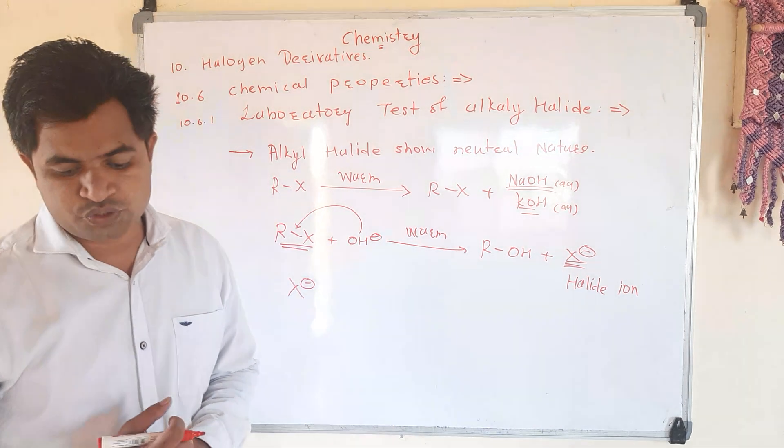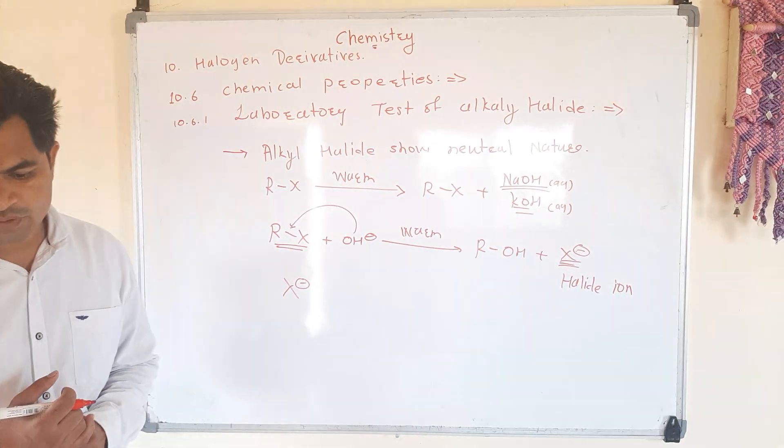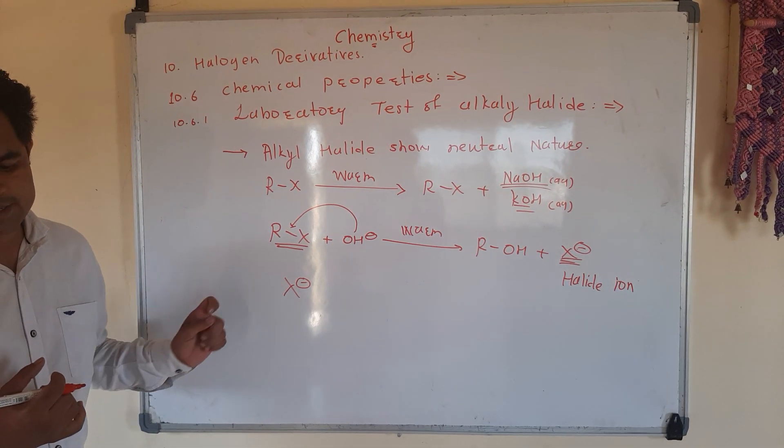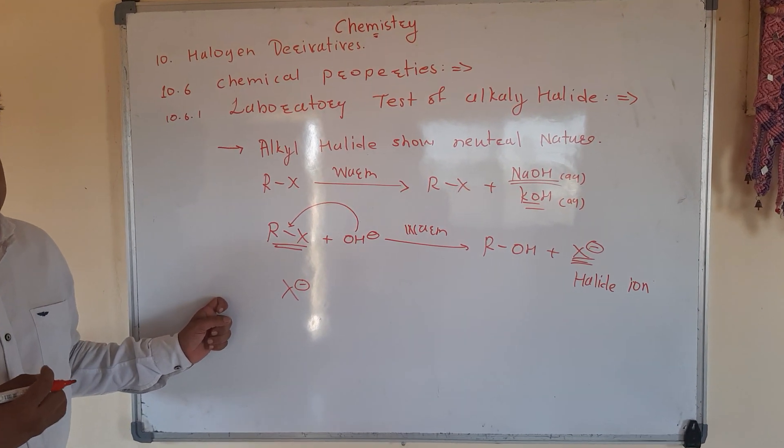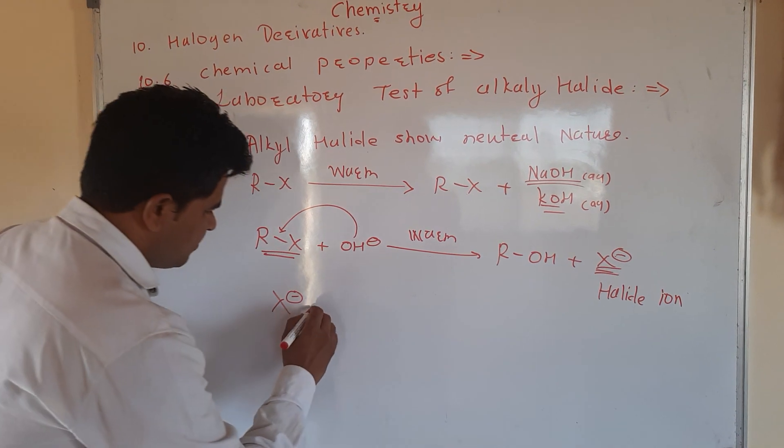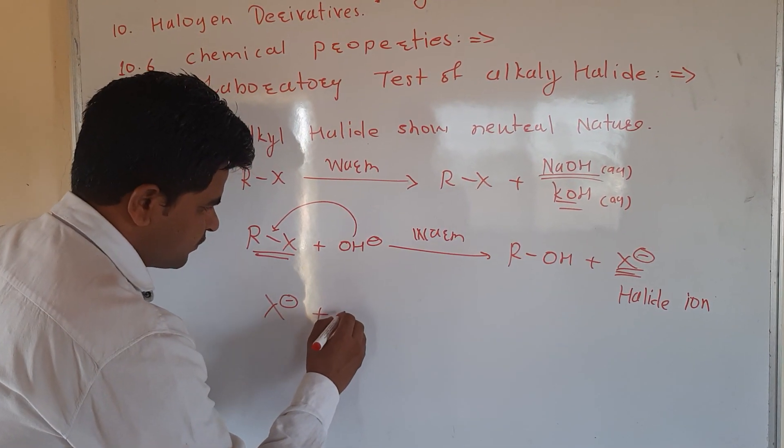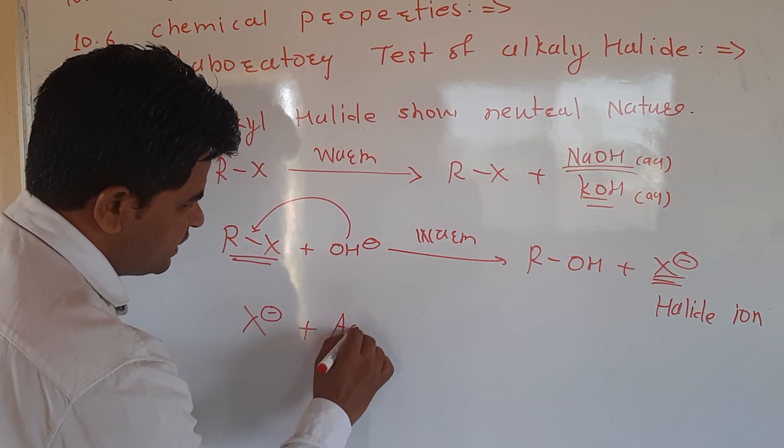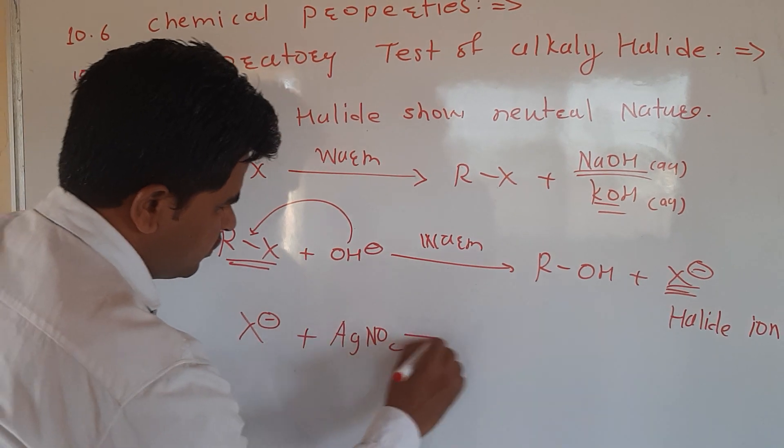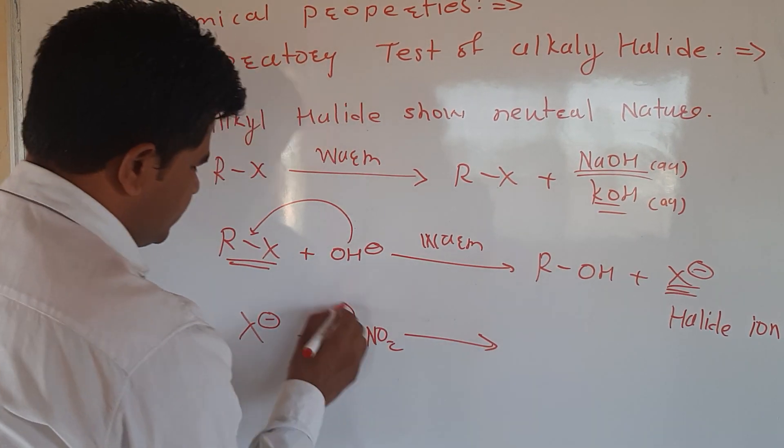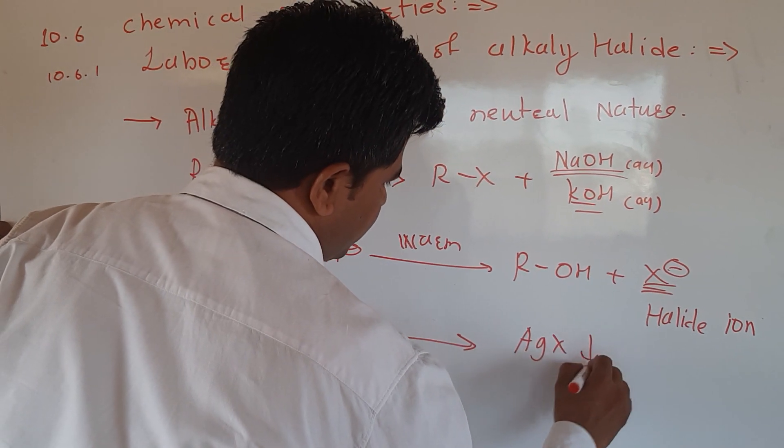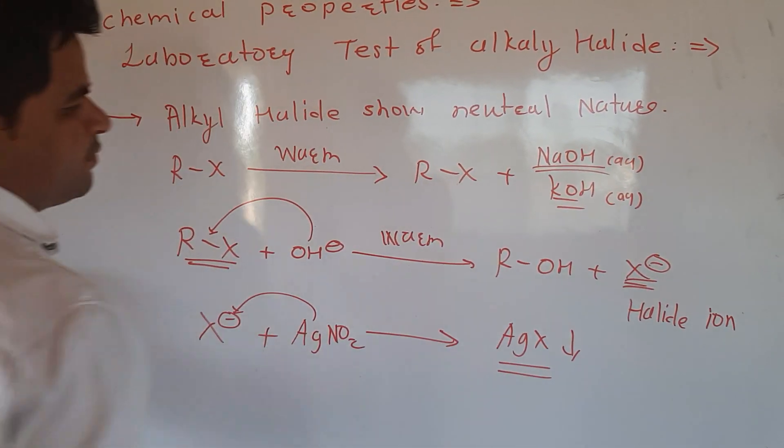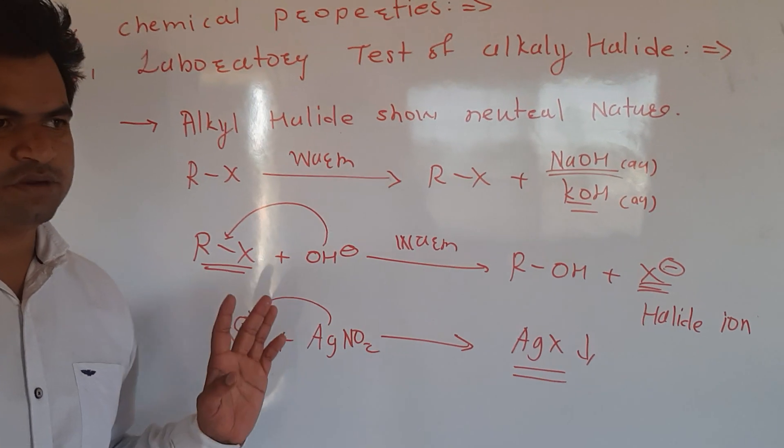This is HNO3, dilute nitric acid. This is silver nitrate, acidified. Suppose we have taken silver nitrate. That time this silver will combine with halide. Silver halide will form. And it gives the presence of halide ion.